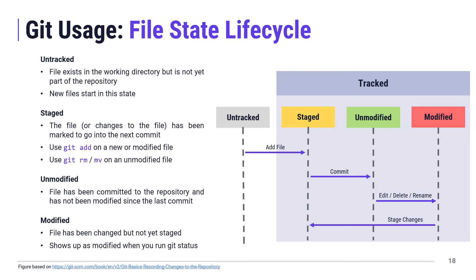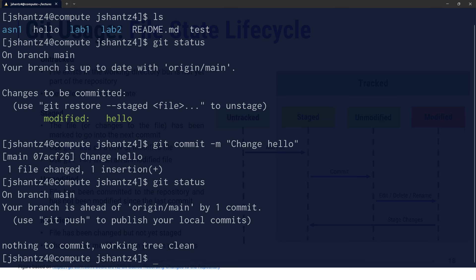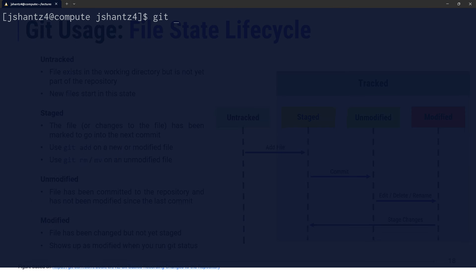You must specify a commit message with every commit. You can do this on the command line using the '-m' flag, like 'git commit -m "your message"'. If you don't specify it, Git will bring up your configured editor for you to write the message there.